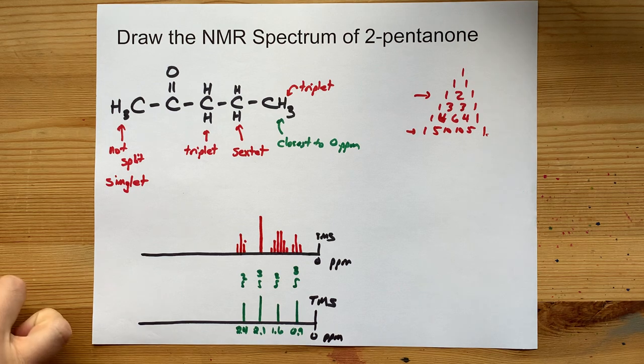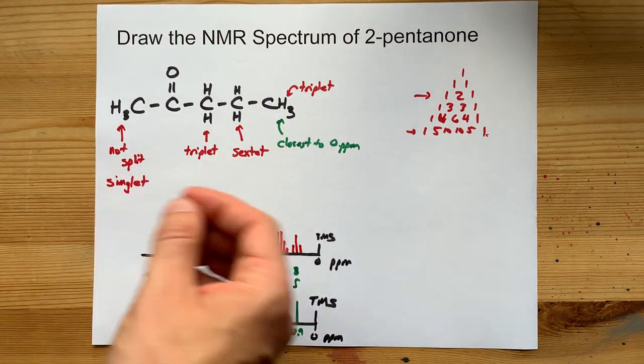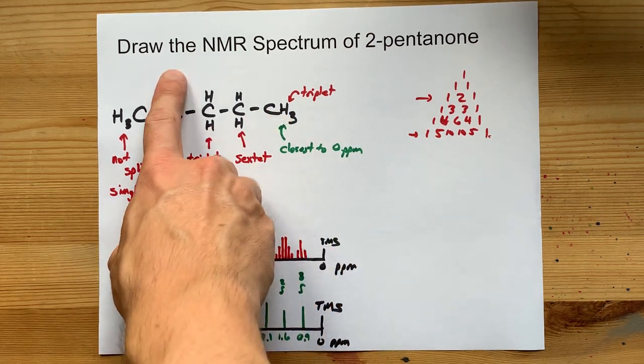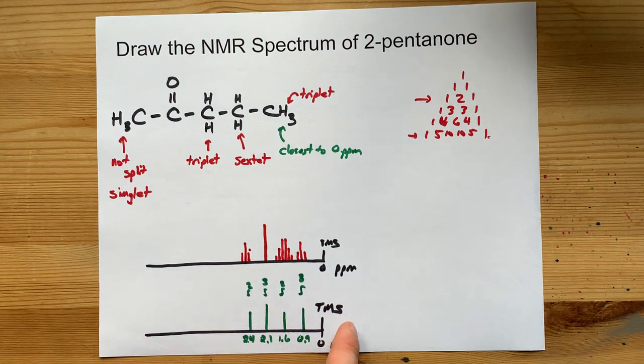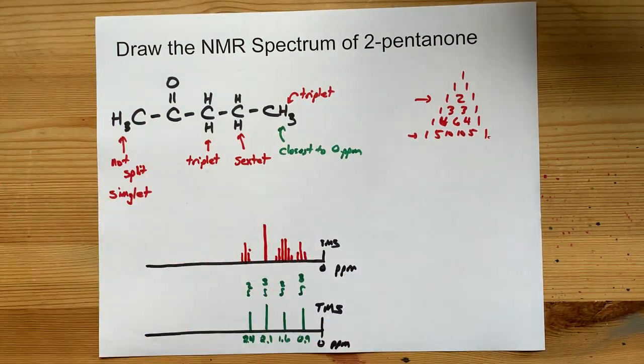The point is you being able to figure out the splitting pattern and knowing that the farther away hydrogens are from the electronegative atom, the closer they are to zero. Not bad. Thanks for sticking with me and best of luck.